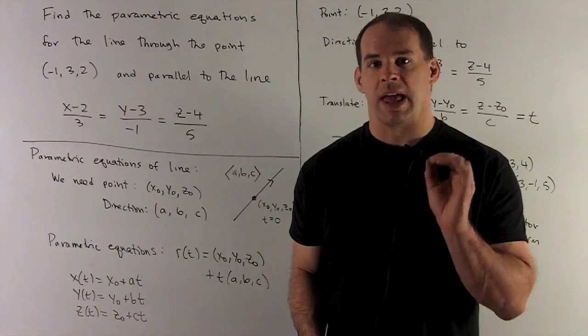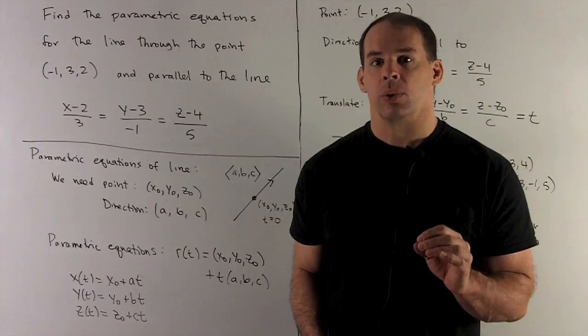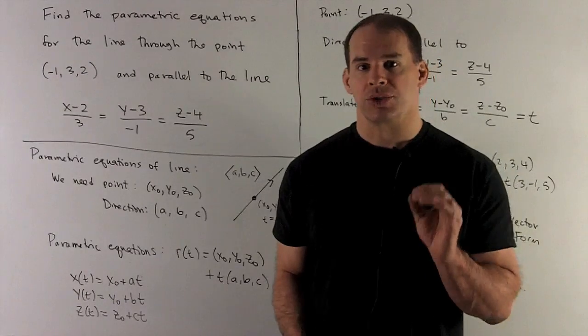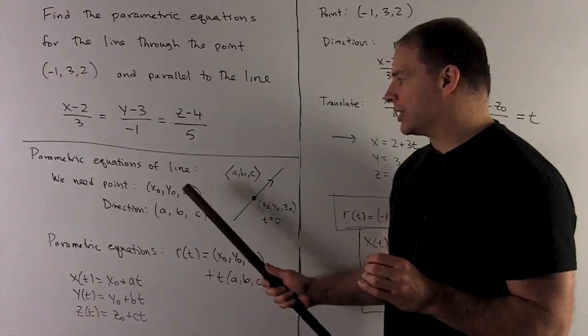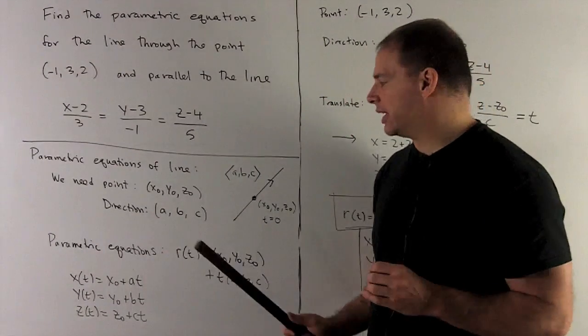For the parametric equation of a line, we're going to need two items: a point and a direction. Let's call our point x0, y0, z0 and our direction ABC.